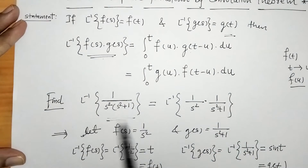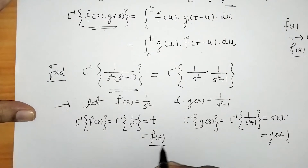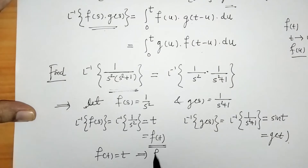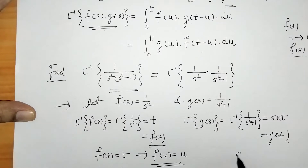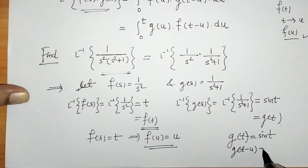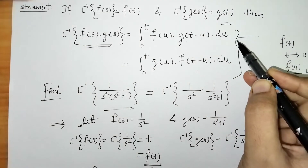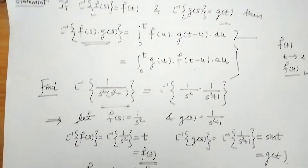Now we have to find the inverse of the product by using the convolution theorem. Since f(t) = t, replacing t by u gives f(u) = u. Since g(t) = sin(t), replacing t by (t - u) gives g(t - u) = sin(t - u). Now we put these values into the integral.